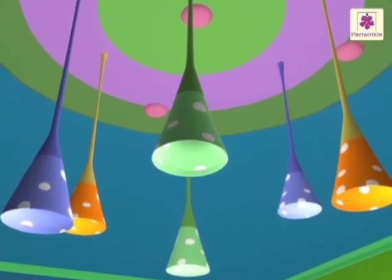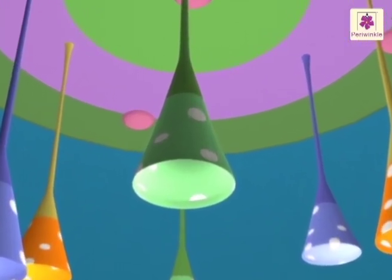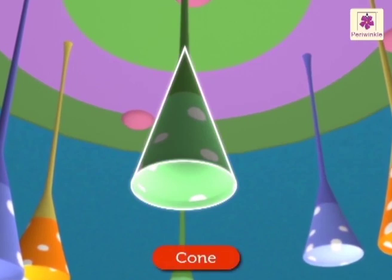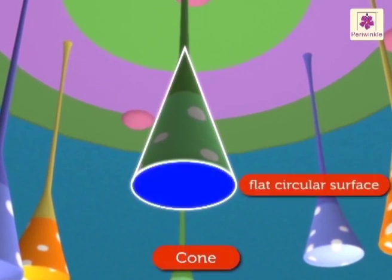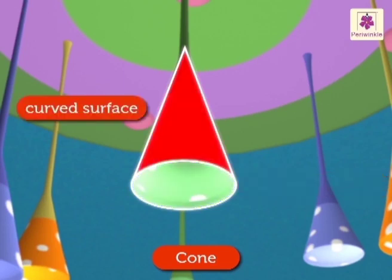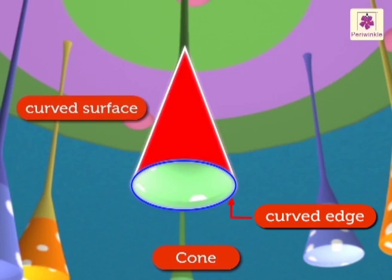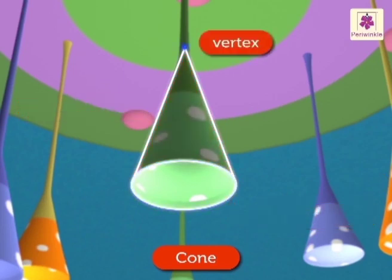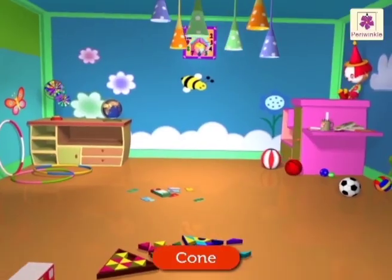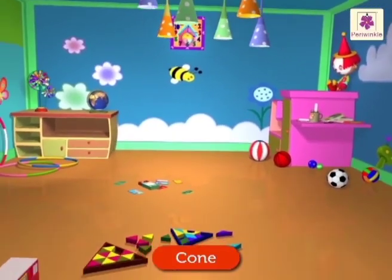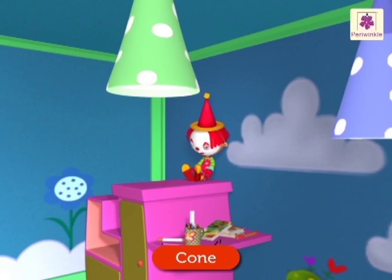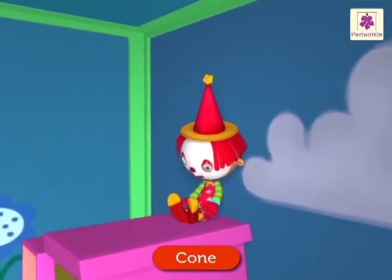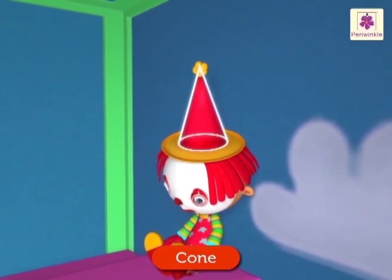The colorful lamp shades hanging from the ceiling are cone shaped. A cone has one flat circular surface, one curved surface, and one curved edge. It has one vertex. Can you search for a clown with a cap? Yes, there it is — the clown cap is also in the shape of a cone.